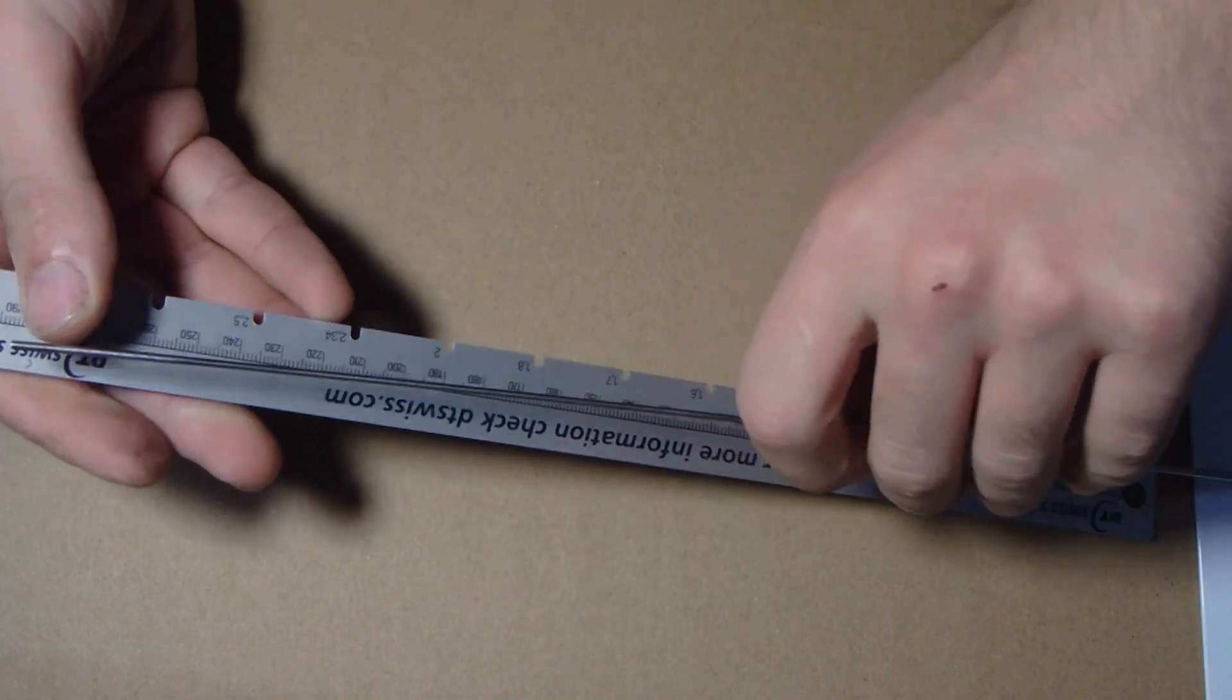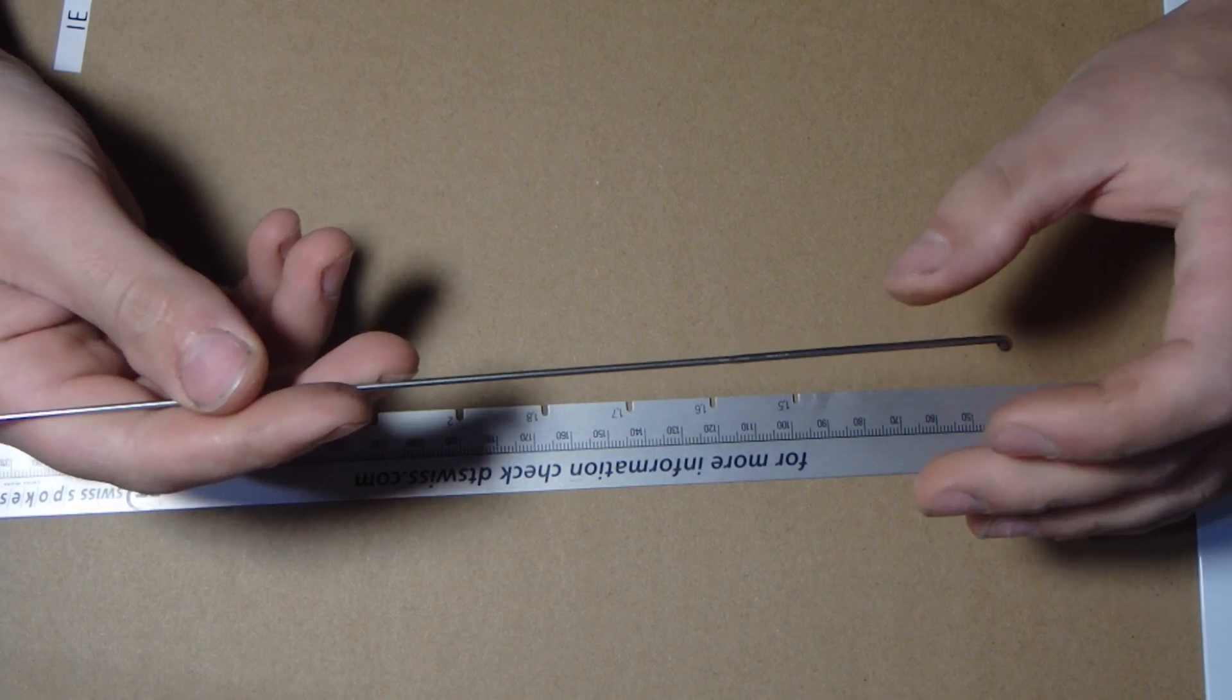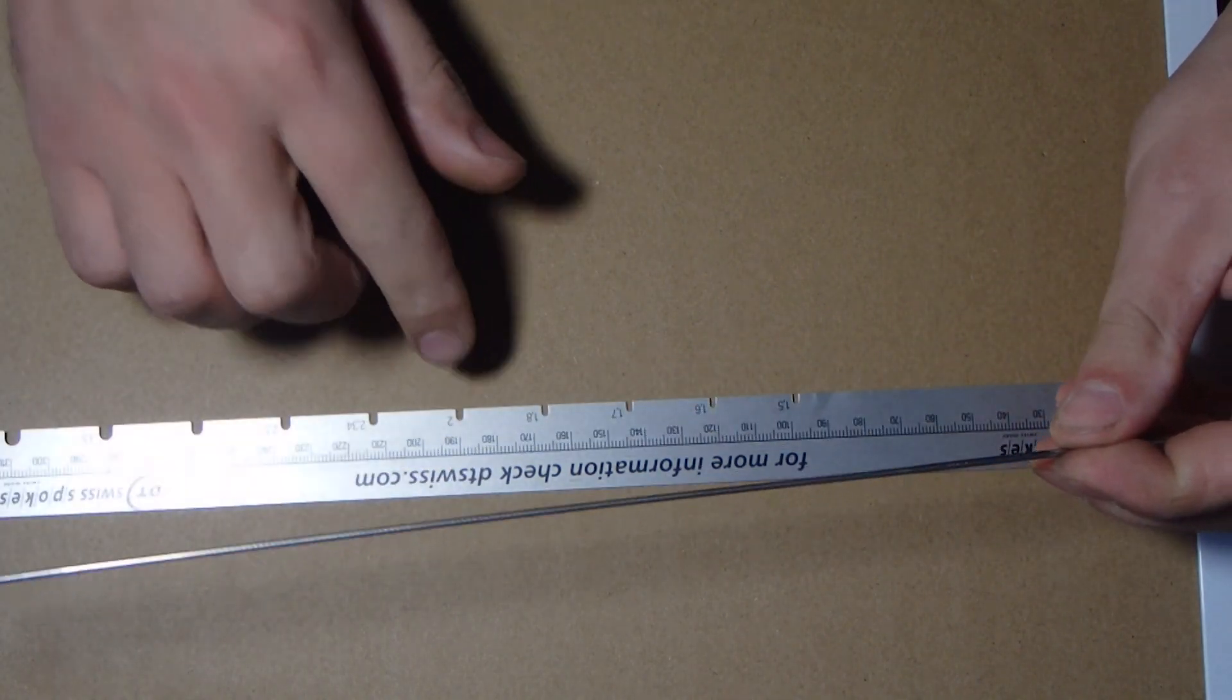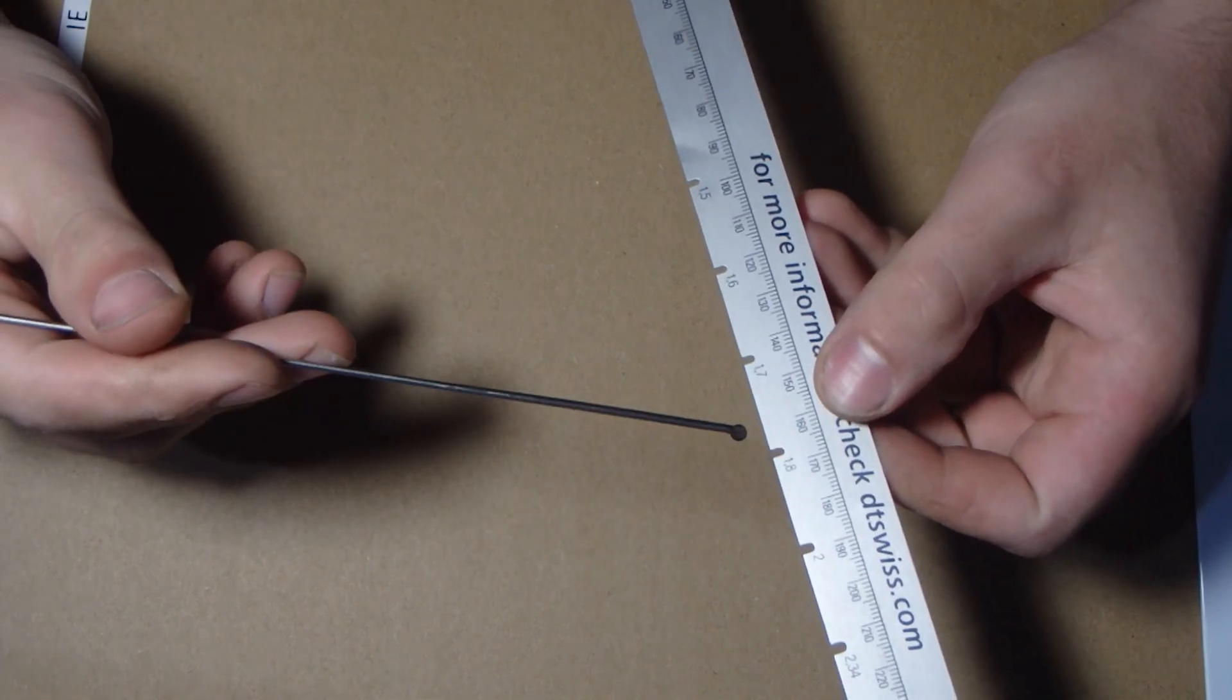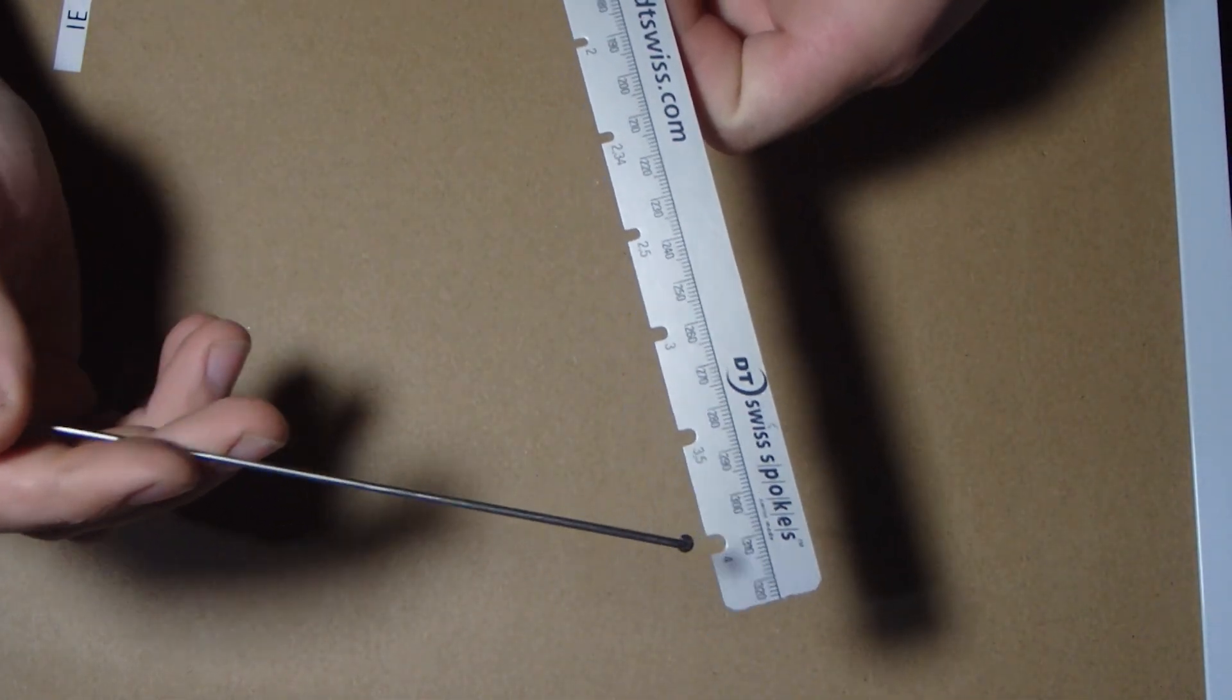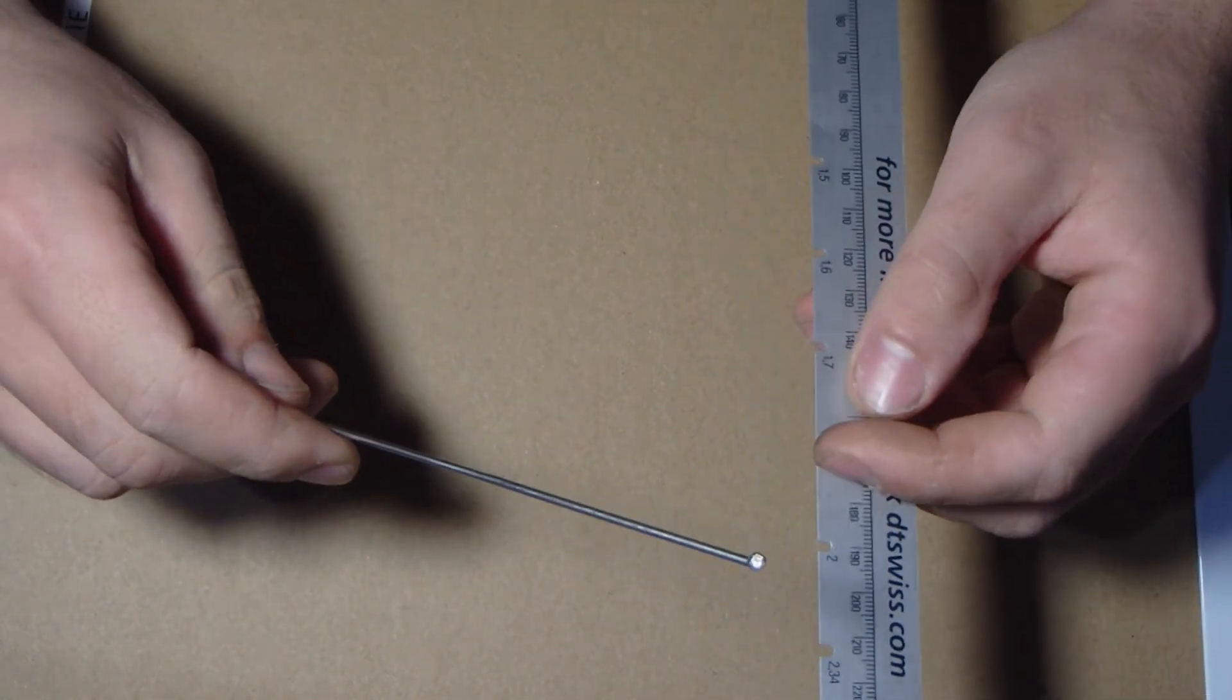So that's the spoke length, and then from there to work out the thickness you can either use a pair of calipers along the length of it, or some spoke rulers like this one are graduated so they've got different measurements along their length. This one goes from 1.5mm all up to 4mm.